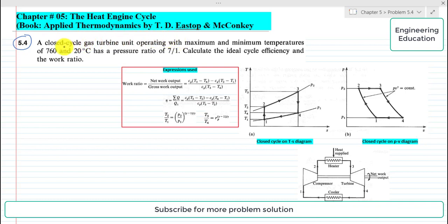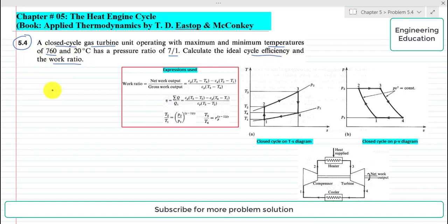The statement of the problem is: a closed cycle gas turbine unit operating with maximum and minimum temperatures of 760 and 20 degrees centigrade has a pressure ratio of 7 to 1. Calculate the ideal cycle efficiency and the work ratio. First of all we will write the given data from the statement.